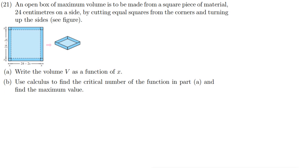Hi everyone, welcome to today's tutorial. In this tutorial I'm going to be discussing this question on the screen: an open box of maximum volume is to be made from a square piece of material 24 centimeters on a side, by cutting equal squares from the corners and turning up the sides to make a box. The first question is to write the volume as a function of x, and the second question is to use calculus to find the critical number of the function and find the maximum value.